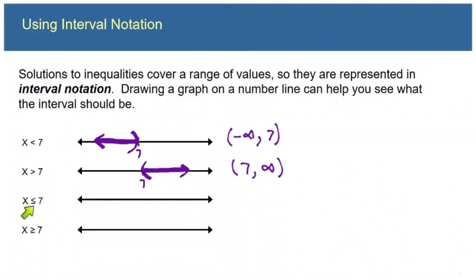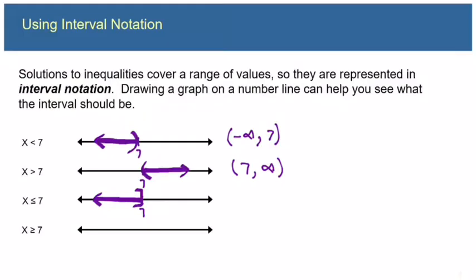Now we have x is less than or equal to seven. I start with the seven and shade to the left for numbers less than seven. But this time, to show that seven can be part of the solution — that x can equal seven — I put a square bracket. The interval notation will be from negative infinity to seven with a bracket.